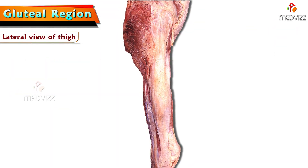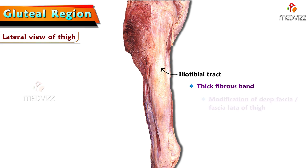This is the lateral view of the thigh showing the thick fibrous band present vertically, which is called the iliotibial tract. The iliotibial tract is a modification of the deep fascia, which is otherwise called fascia lata in the thigh. So it is a modification of the fascia lata of the thigh.